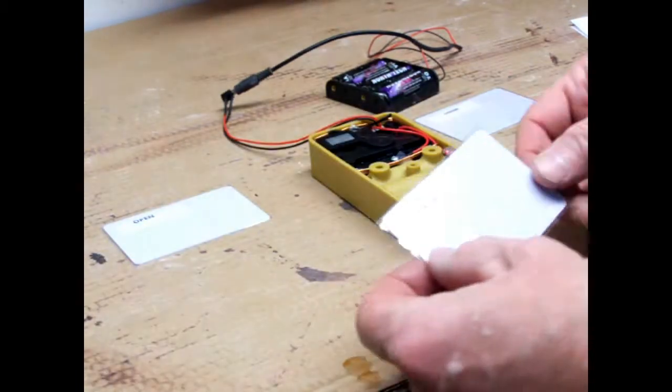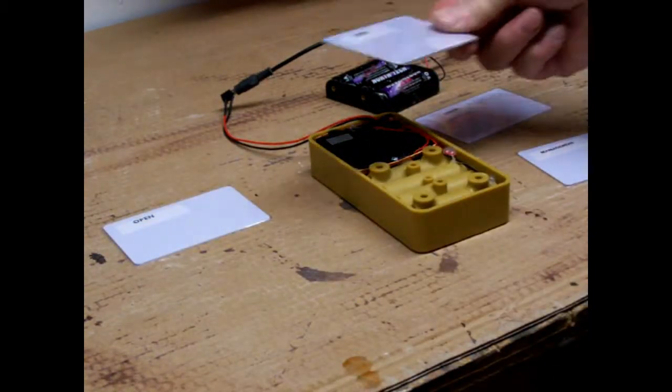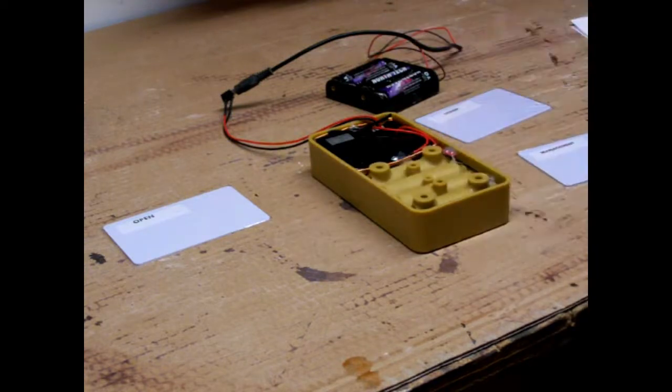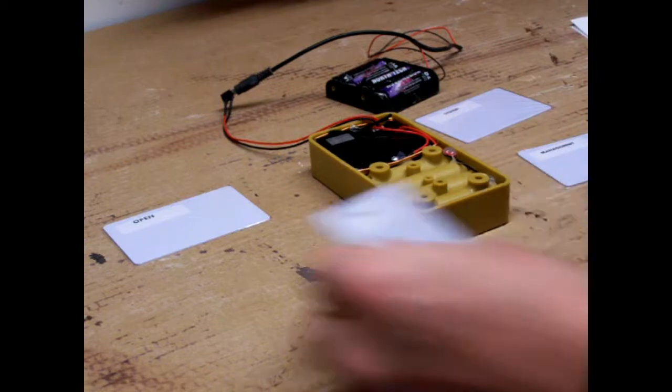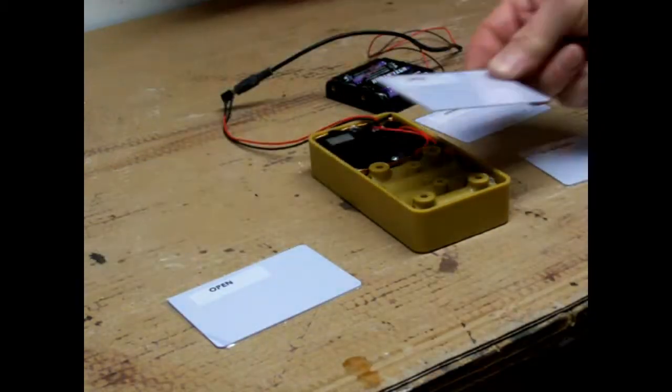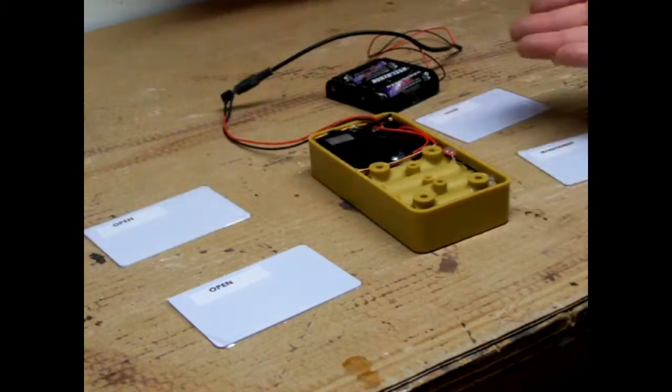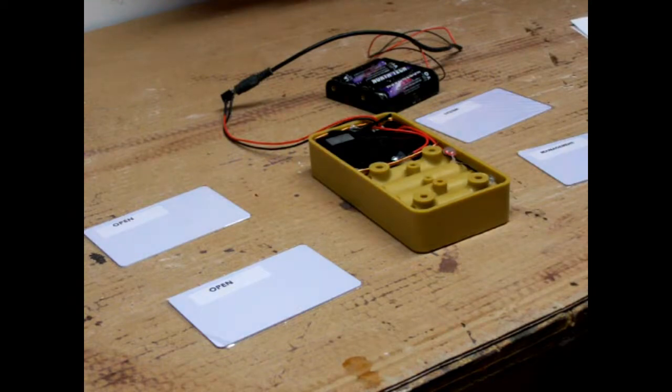So I can test it by simply taking one of the new opening cards and scan it. You notice the lock pushes in. In a few seconds, it'll come back out. So now it's in locked mode. I can test this one as well. Scan it across there. It's now in open mode. And now it's in locked mode.